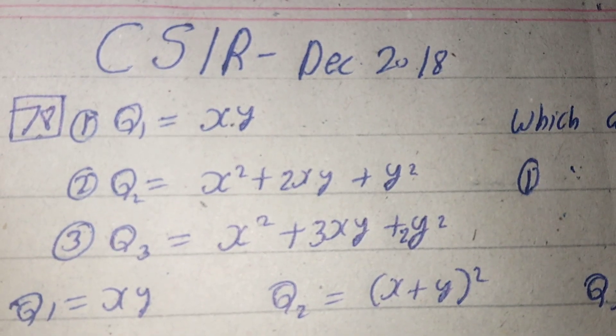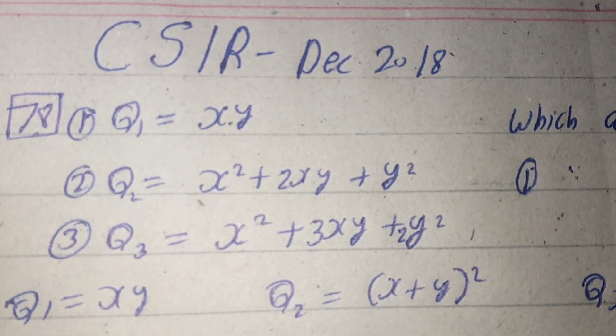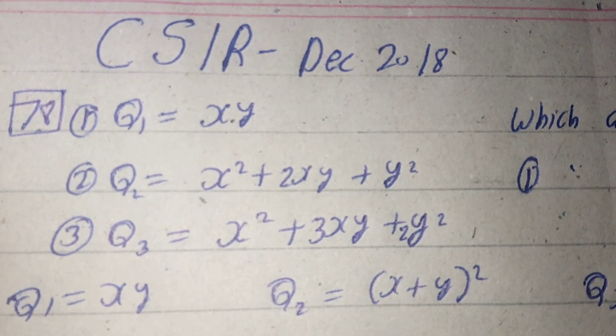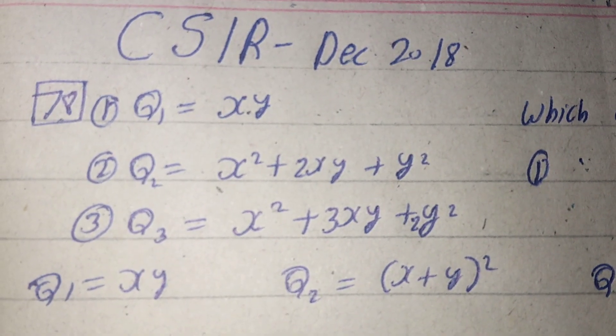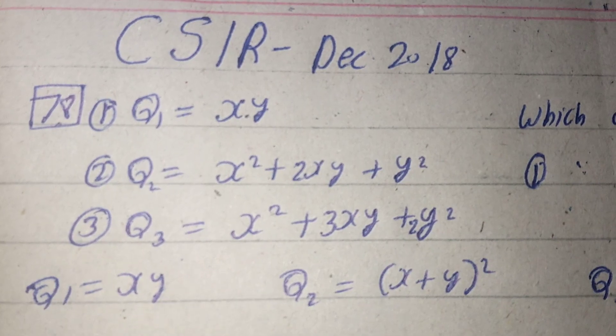q1 equals xy, q2 equals x² + 2xy + y², and q3 equals x² + 3xy + y².